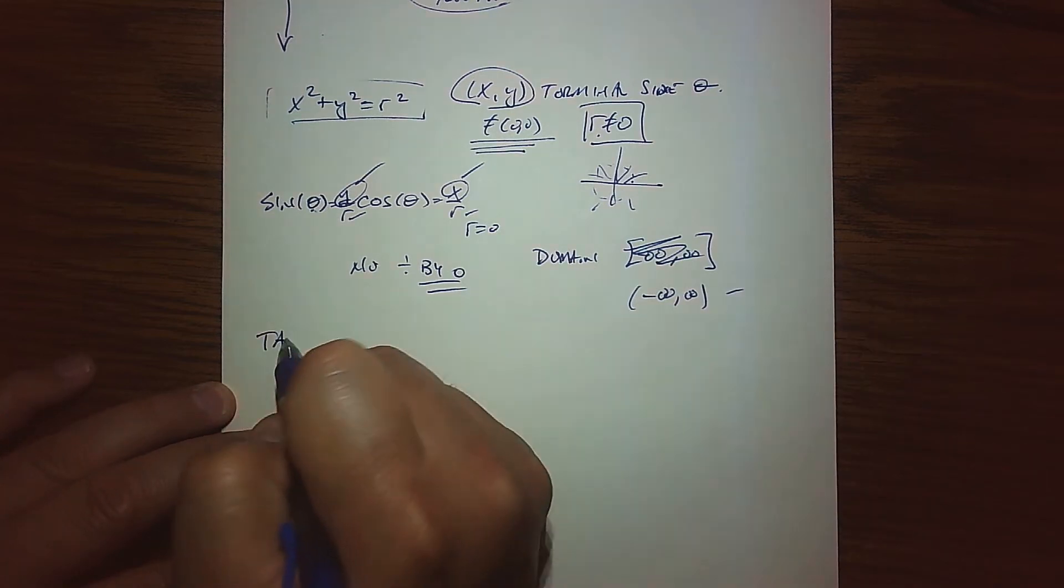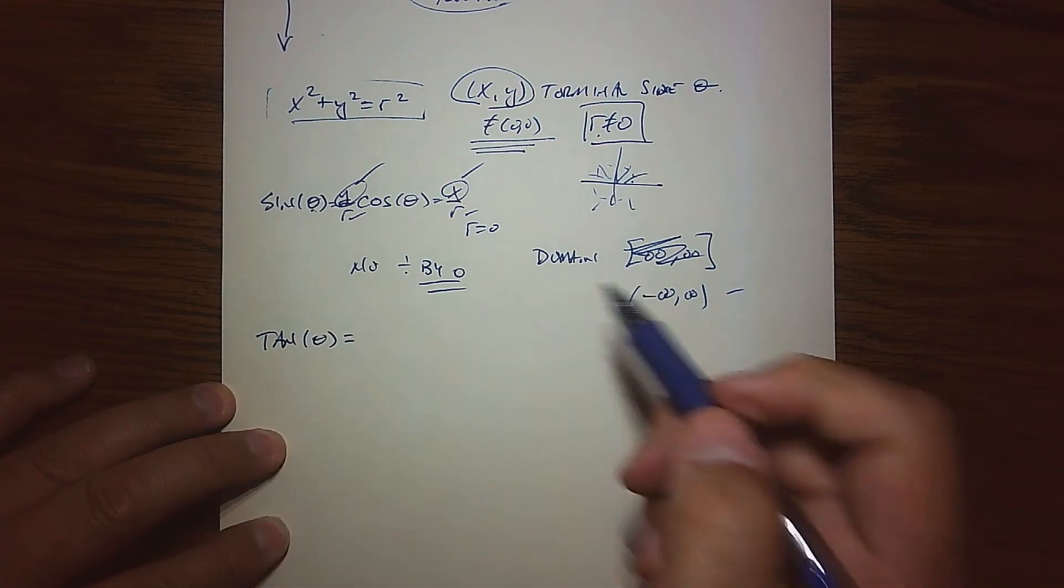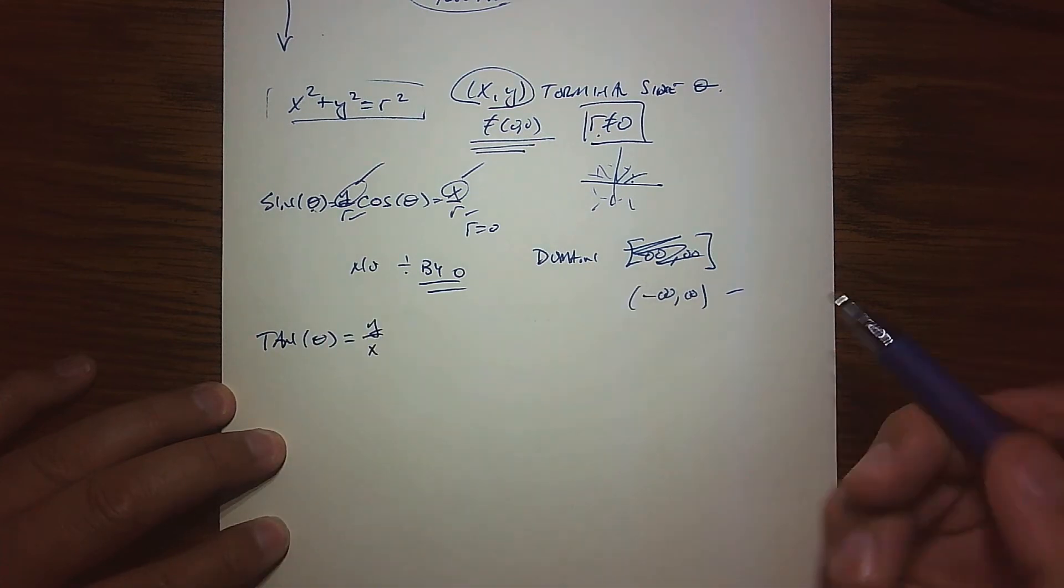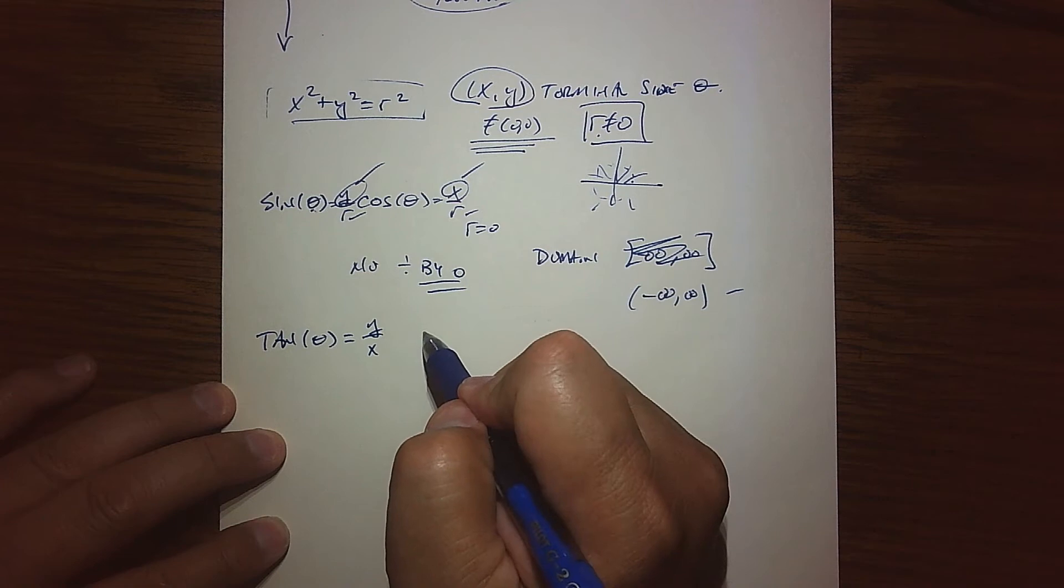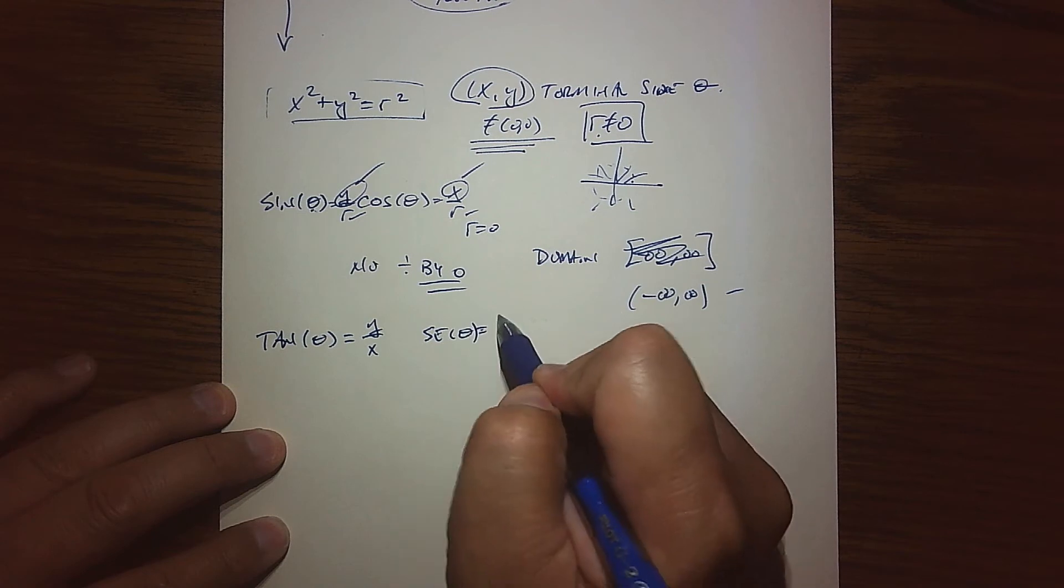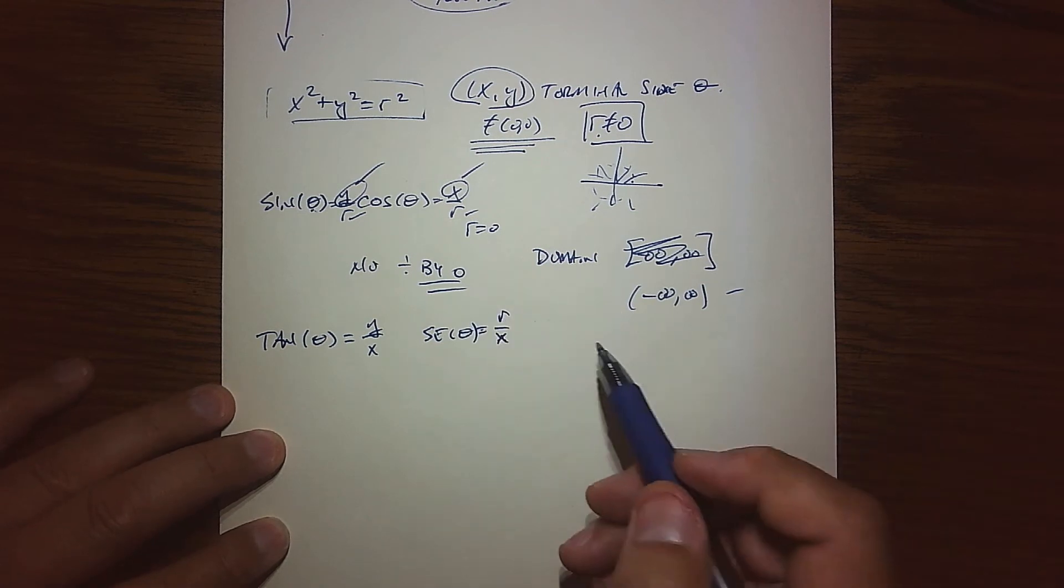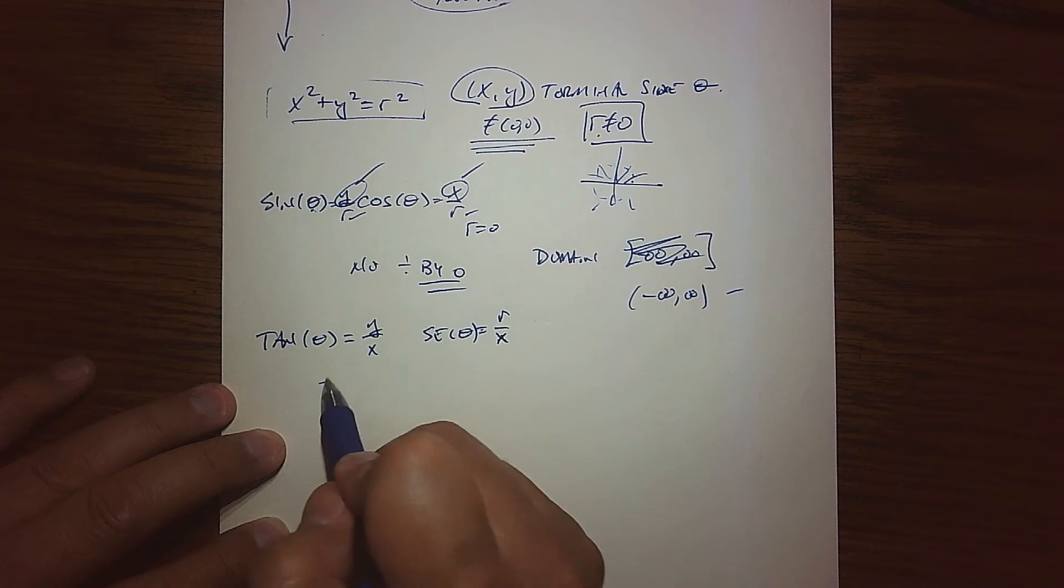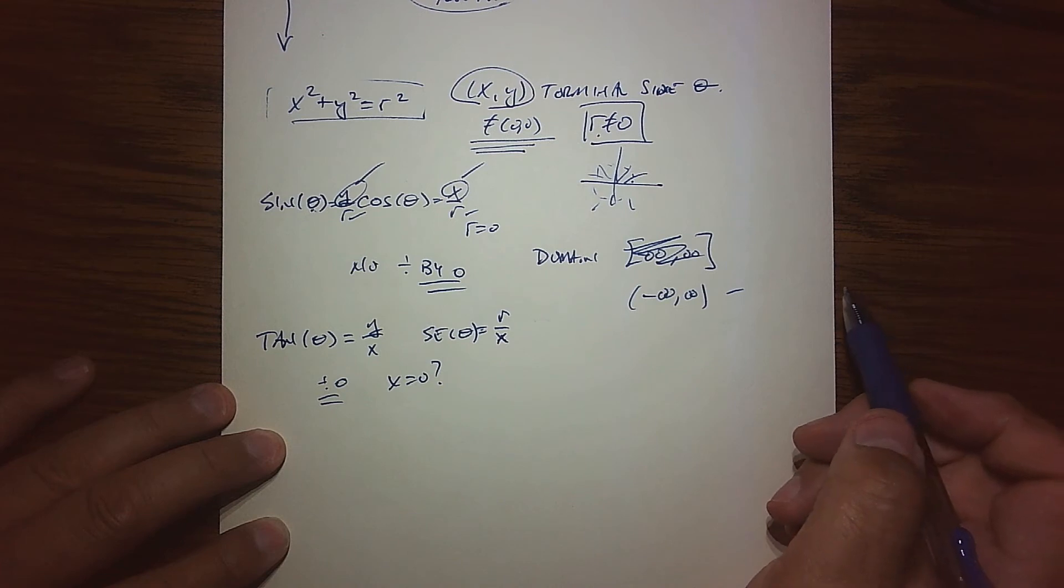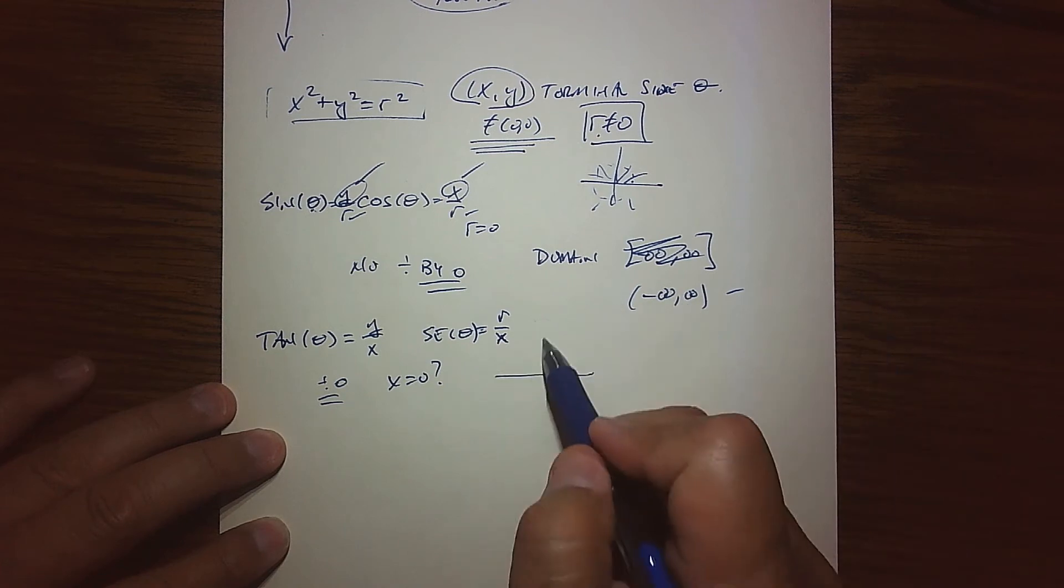Now the next one I want to consider is tangent of theta. By definition, tangent is Y over X, and then the secant of theta is R over X. This is really important because now the only thing we have to worry about is when are we dividing by zero, and that means when does X equal zero?